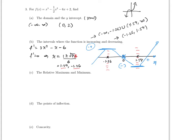The maximum is going to be whatever F of negative 1.26 is — that's the local maximum, which is 6.77. And the minimum will be F of 1.59, which is negative 4.78. On the exam there are going to be whole numbers, so you shouldn't have to worry about decimals.